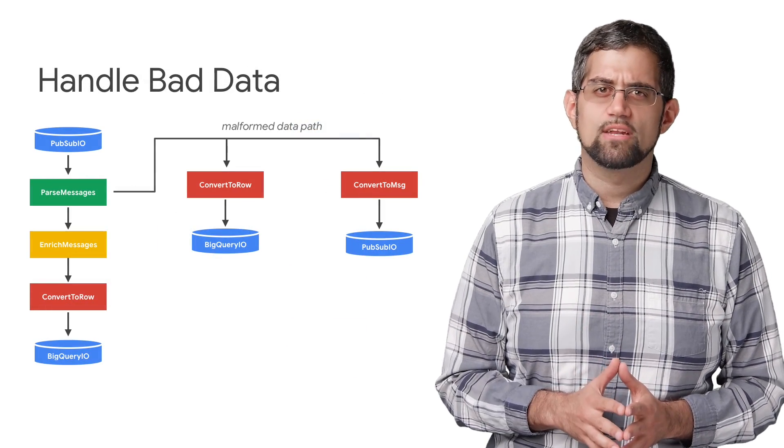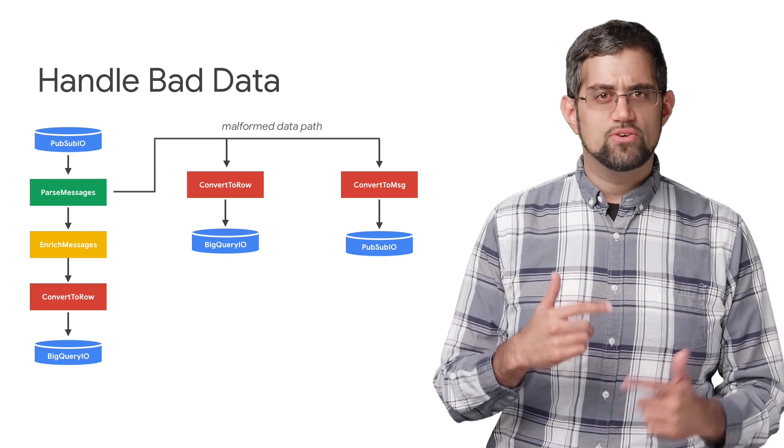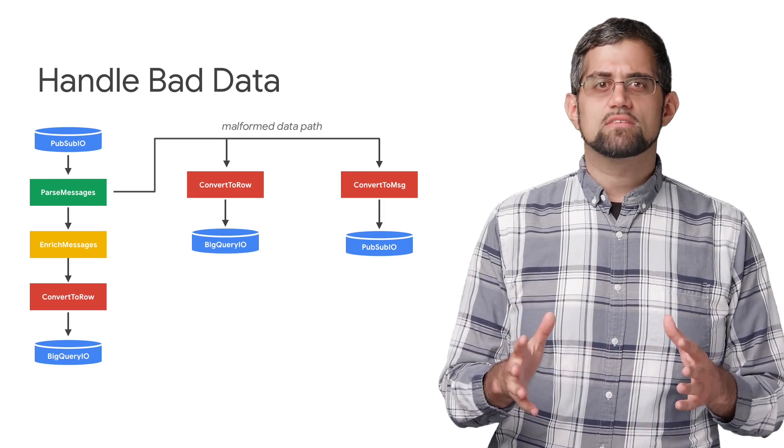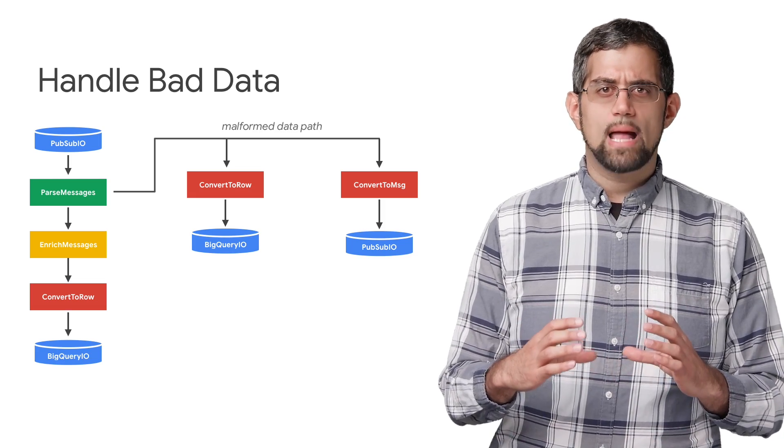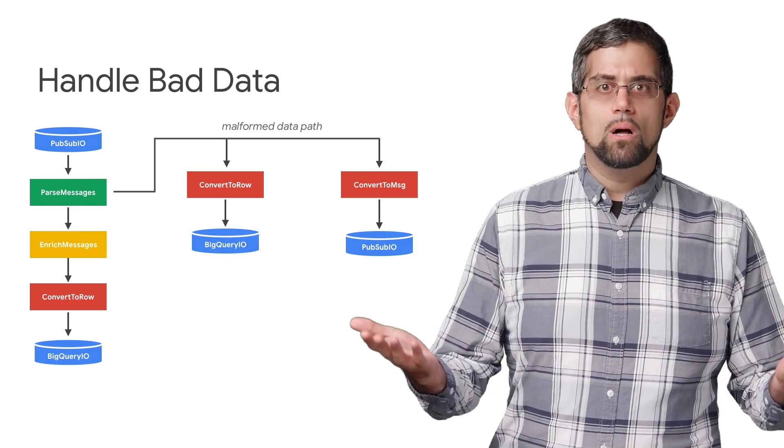Next, we'll want to make sure we can handle bad data that comes in. By default, Dataflow will continuously retry those records because we don't want to lose data. Instead of that, let's build in a system to handle malformed data, storing it in BigQuery for further analysis and setting up alerts in Google Cloud Functions. Now we know that data won't be lost.